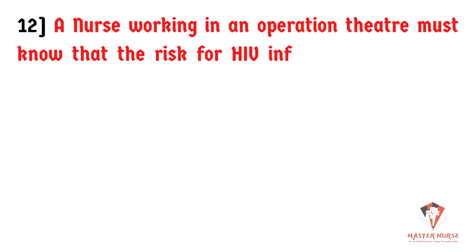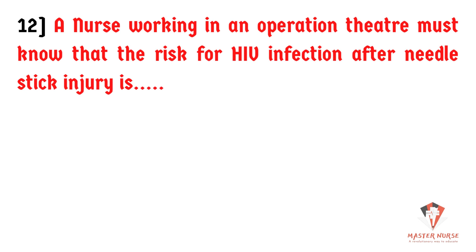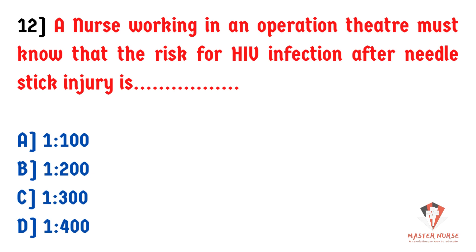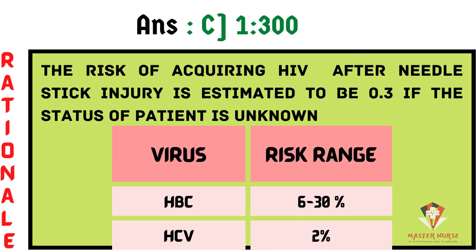A nurse working in an operation theater must know that the risk for HIV infection after needle stick injury is: A) 1:100, B) 1:200, C) 1:300, D) 1:400. The answer is 1:300. The risk for acquiring HIV after needle stick injury is estimated at 0.3%. For HBV it is 6–30%, and for HCV it is 2%.